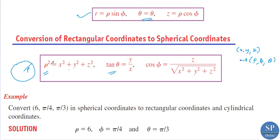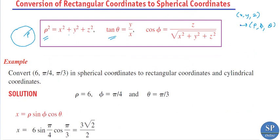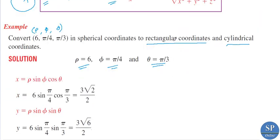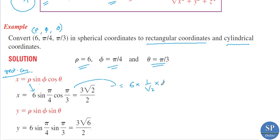As an example, convert (6, π/4, π/3) in spherical coordinates to rectangular and cylindrical coordinates. We have ρ = 6, φ = π/4, θ = π/3. For rectangular coordinates: x = ρ sinφ cosθ = 6·sin(π/4)·cos(π/3) = 6·(1/√2)·(1/2) = 3/√2 = 3√2/2.